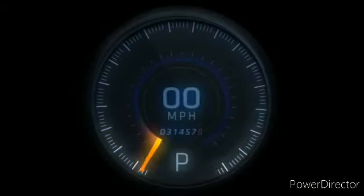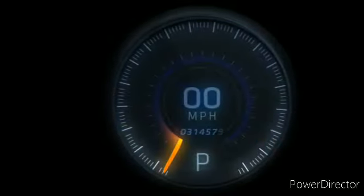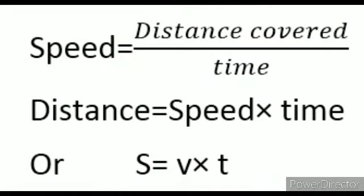Basically, speed is the distance covered by a moving object in unit time. If any object moves from one place to another, the time it takes to complete that distance is its speed. The things we require to measure speed are distance and time. Speed is equal to distance divided by time.